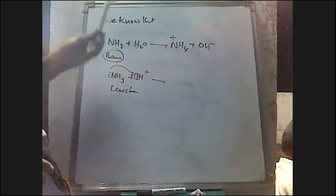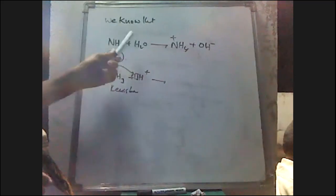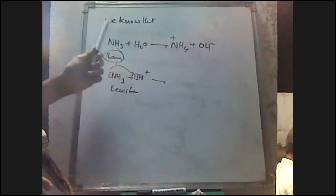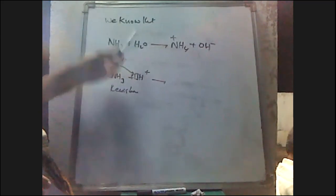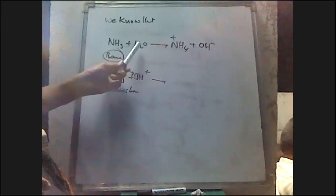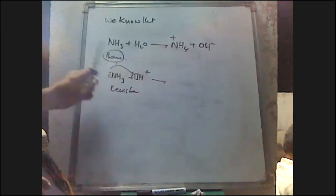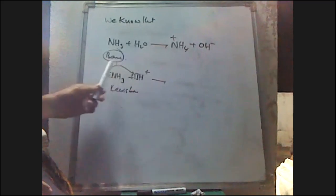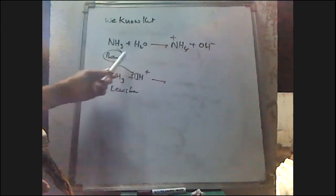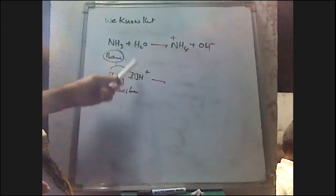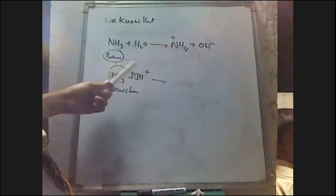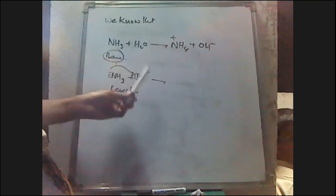So ammonia acts as a Lewis base as well as a Brønsted-Lowry base. When it is interacting with water molecules it acts as a Brønsted-Lowry base. When it is interacting with electron-deficient molecules such as BF3 or H+, it donates a pair of electrons to the vacant orbital of H+ or the vacant orbital of BF3, acting as a Lewis base.